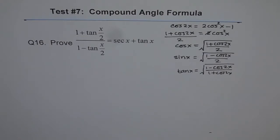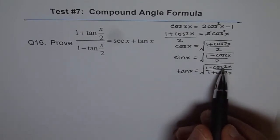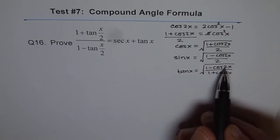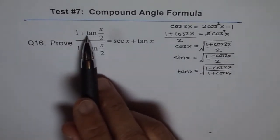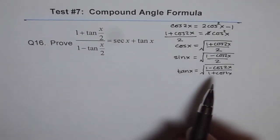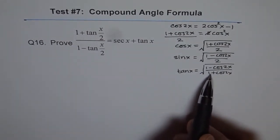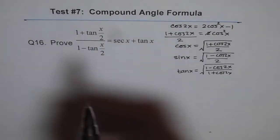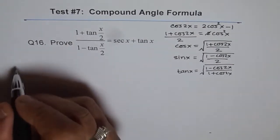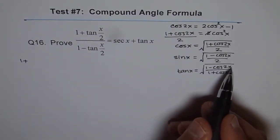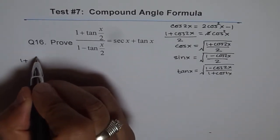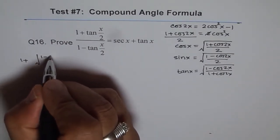These formulas are a recap for those who don't remember them. Now, if we let 2x = θ, then x becomes θ/2. So for tan(x/2), I can use this ratio with 1 − cos 2x and 1 + cos 2x, replacing x with x/2 so that cos 2x becomes cos x. The numerator becomes 1 + tan(x/2), which I write using this formula with x replaced by x/2.